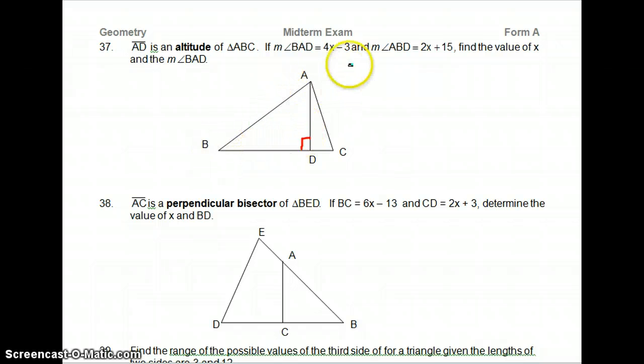BAD is up here, 4X minus 3. ABD, B is right here. That's going to be 2X plus 15. So we know that all three of these angles have to add up to 180 degrees. So we're going to do 2X plus 15 plus 4X minus 3 plus 90 equals 180.